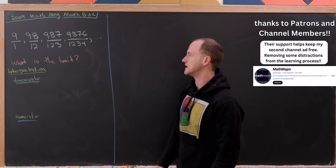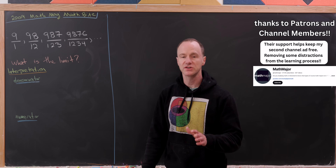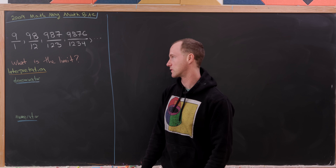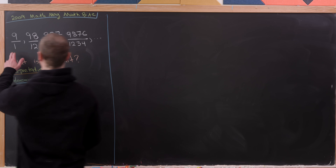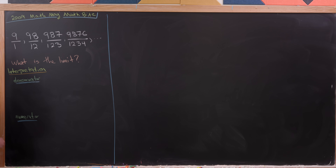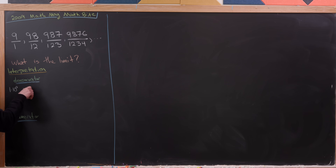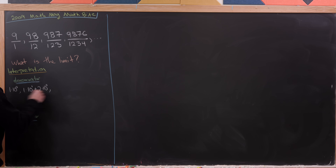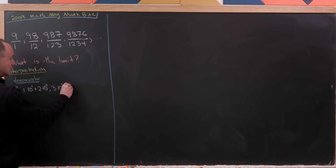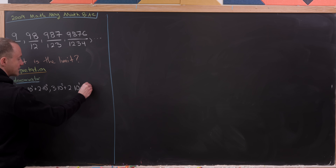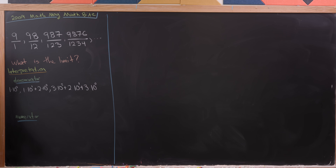Let's jump into the interpretation for our second go at this limit, starting with the denominator because it's slightly simpler. Let's write out the sequence of denominators with a bit more structure. The first term can be written as 1 times 10 to the 0. The second term is 1 times 10 to the 1 plus 2 times 10 to the 0. The next term is 1 times 10 to the 2 plus 2 times 10 to the 1 plus 3 times 10 to the 0.